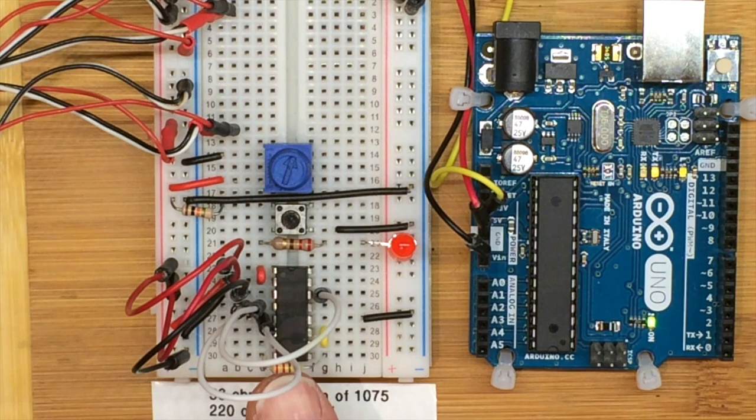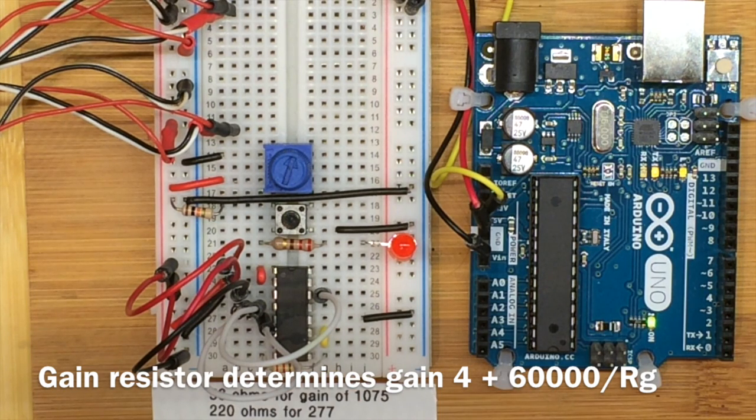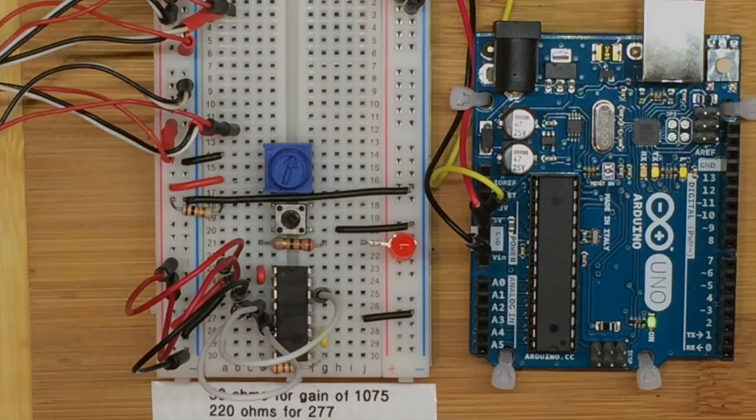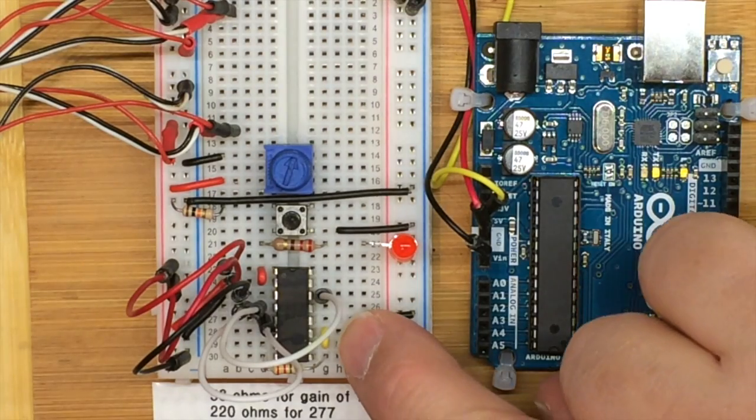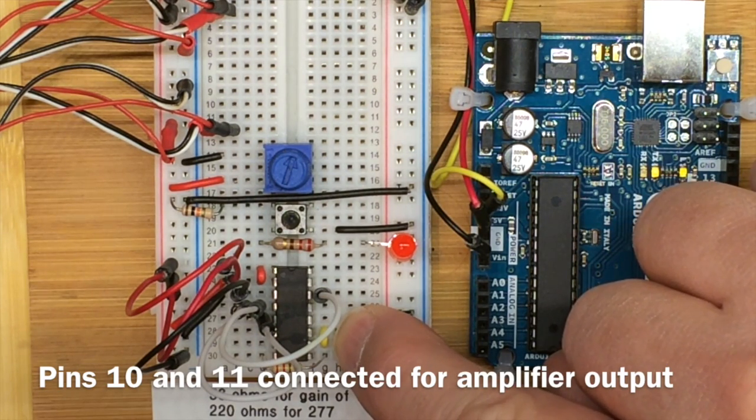This 220-ohm gain resistor connected between pins 8 and 9 sets the gain. So for 220-ohm, that gain turns out to be a factor of 277. As before, pin 10 and 11 are connected. They're both providing the output information.